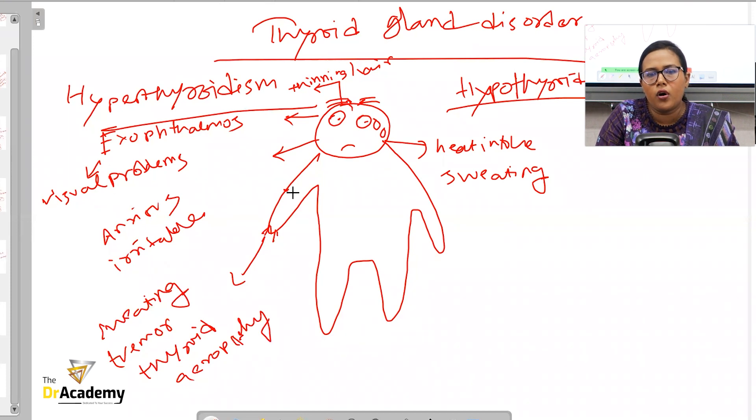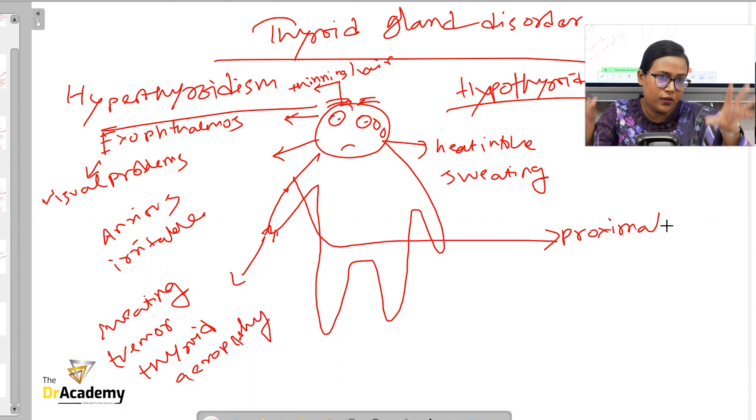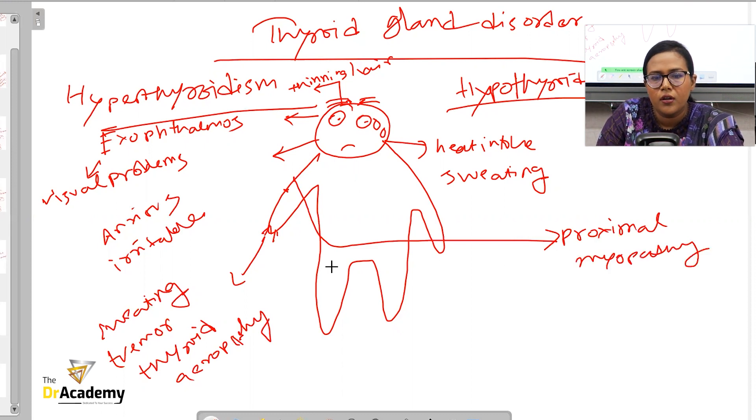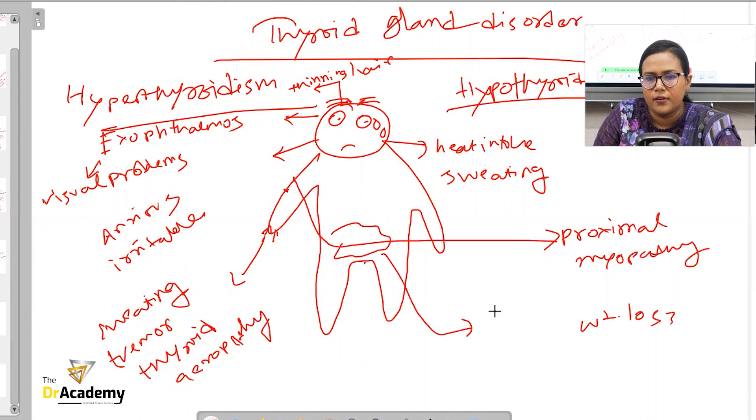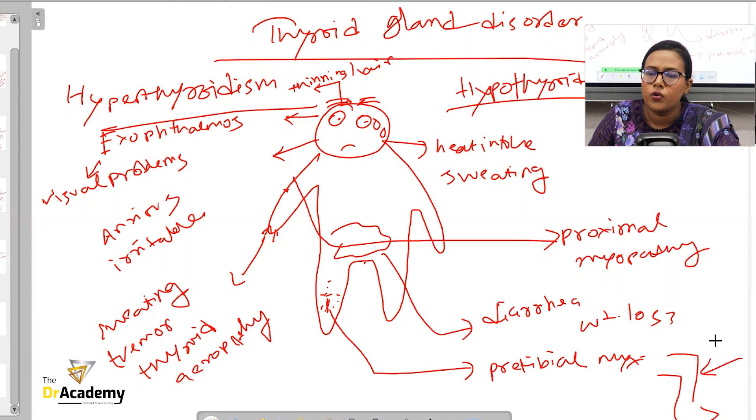From there, if we go a bit upwards, the patient might have proximal myopathy as well. I know you guys know everything related to thyroid problems. I'm just trying to put it down. Proximal myopathy. Moving on from here, general weight loss has been mentioned. So there might be problems with diarrhea, loose motion. And in the legs, you can get pretibial myxedema. And if this patient goes for a knee-jerk test, it may be exaggerated in case of hyperthyroidism.